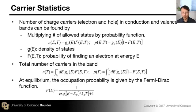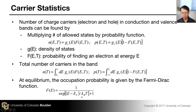At equilibrium, the occupation probability for any electronic state is given by a function called the Fermi-Dirac distribution function, or Fermi-Dirac probability function. It is 1 over [exp((E minus E_F) divided by kT) plus 1]. E_F is a quantity called the Fermi level, k_B is the Boltzmann constant, and T is the temperature in Kelvin.